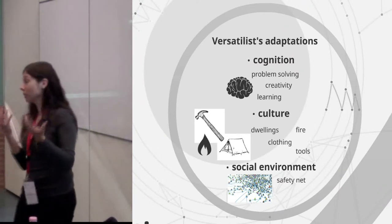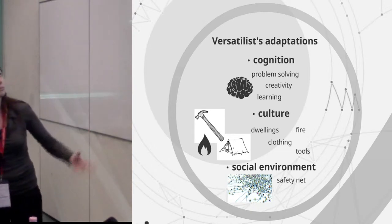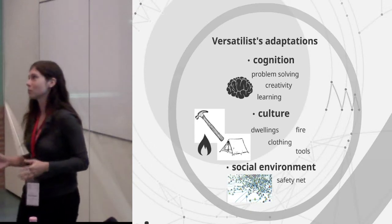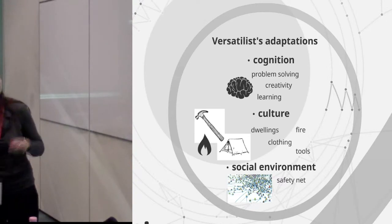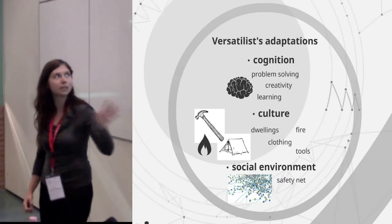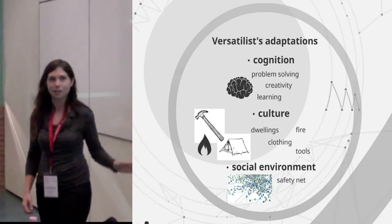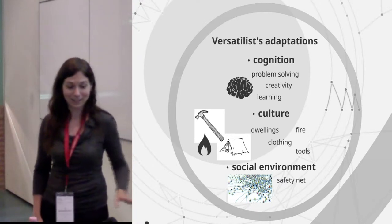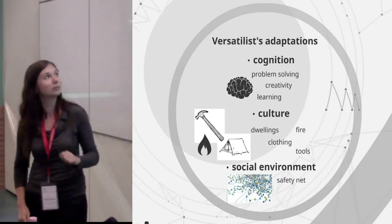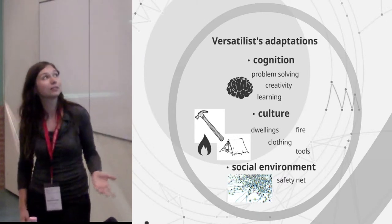And here I came up with a few things that I think could be understood as that behavioral plasticity or versatilist. It's that our big brains with problem solving, creativity, learning, all of those things allow us to adapt to changing environments very quickly. We have the culture that I already mentioned with blowing, fire, clothing, all of this came in the Paleolithic, the tools, the fantastic hand axes and not that fantastic small tools.